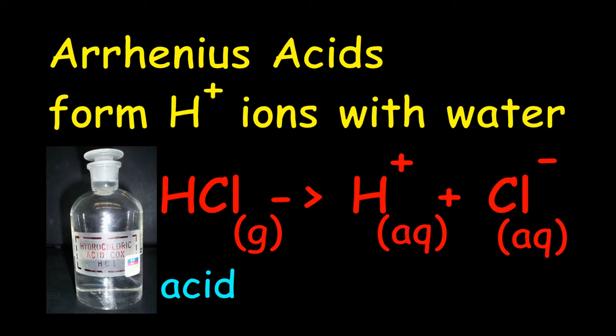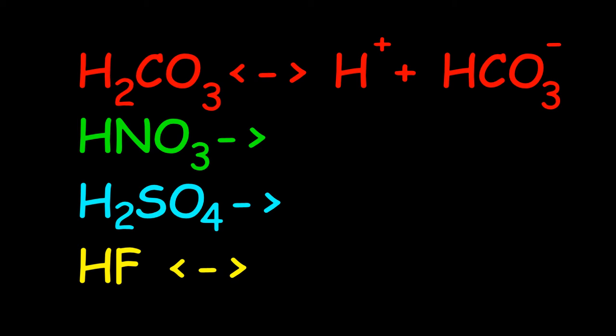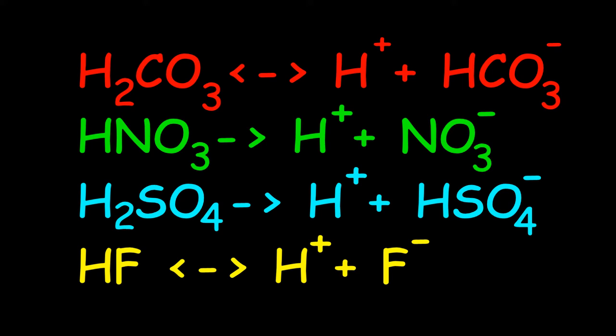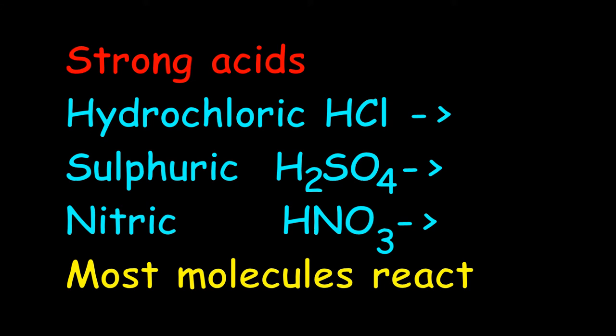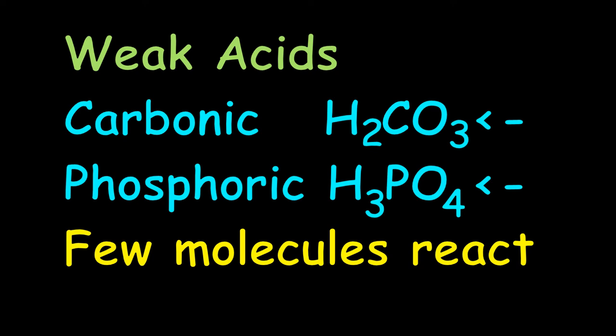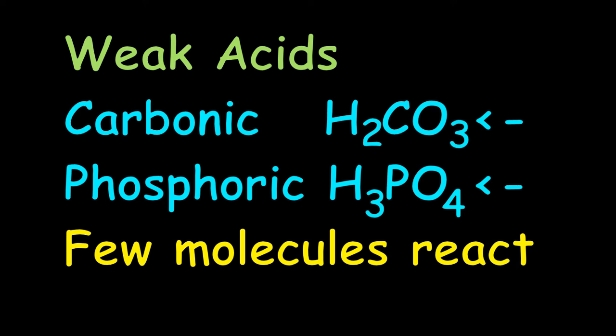To write the equation we take the acid species and rip an H⁺ off it. Pause the video and try to complete the others. Strong acids, such as hydrochloric, sulfuric and nitric, have most of their acid molecules react. With weak acids, such as carbonic and phosphoric, only a small proportion of molecules make hydrogen ions. Some acids, such as sulfuric, can lose more than one hydrogen — the second step is a weaker acid.